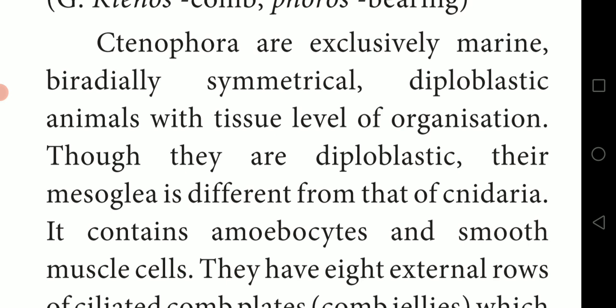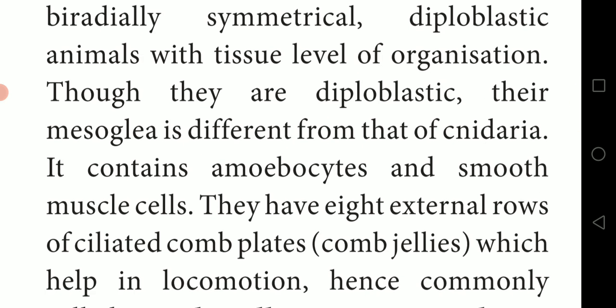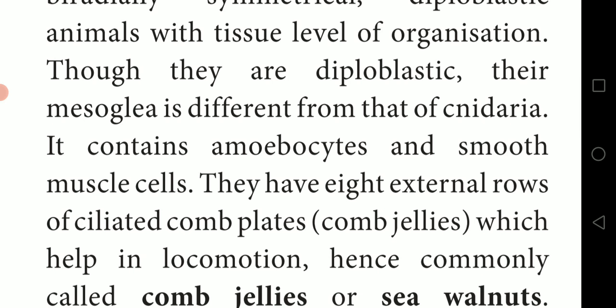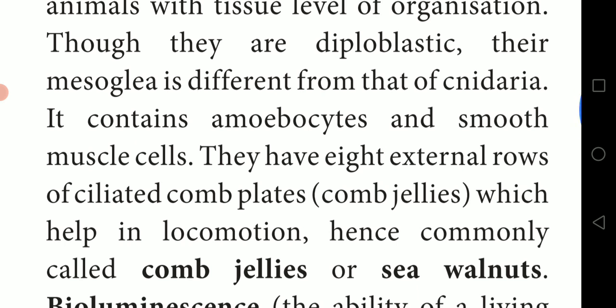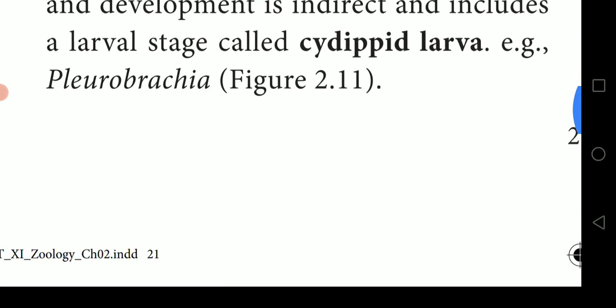The mesoglea of Ctenophora contains amoebocytes and smooth muscle cells. They have eight external rows of ciliated comb plates, which help in locomotion. These comb plates are why these animals are commonly called comb jellies.